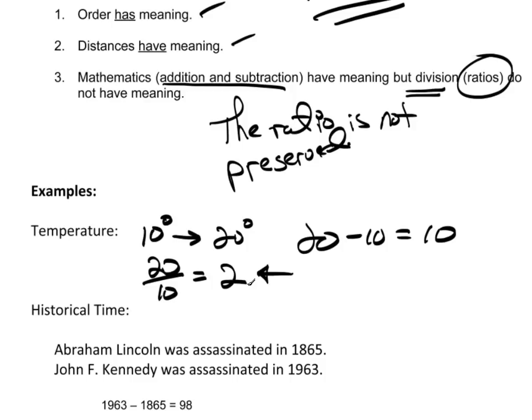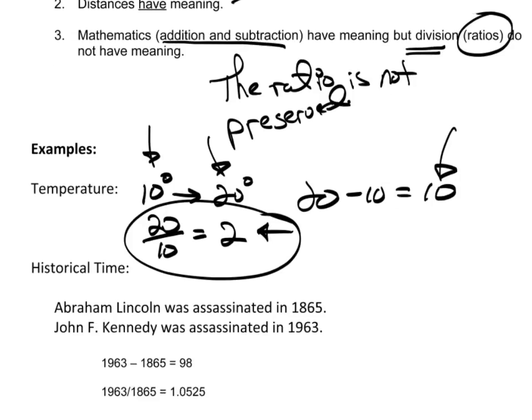So if I take 20 divided by 10, that equals 2. But what does that 2 mean? Is it now twice as hot? I don't know about you, but I'm thinking I'm freezing at 10 or 20. It doesn't really make a difference. So this ratio is not preserved. It's not twice as hot. So that's a classic example of something that has interval scale. I can add and subtract and the number makes sense. But as soon as I divide, I get something that really doesn't make sense.